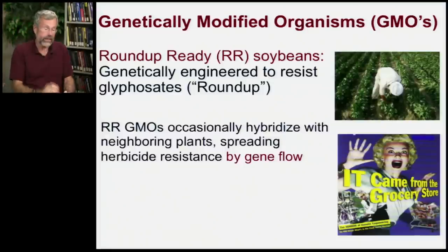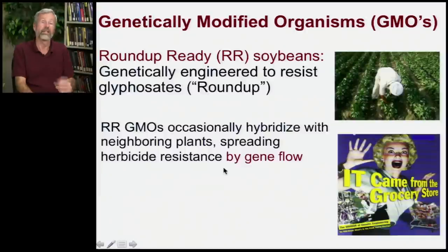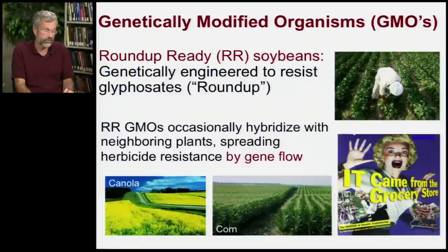So the genes from the soybeans are getting into weeds, and that's spreading the herbicide resistance. This is a classic case of gene flow.